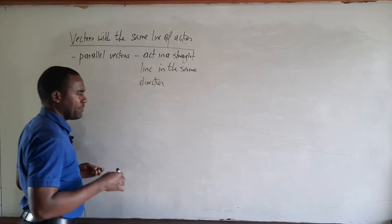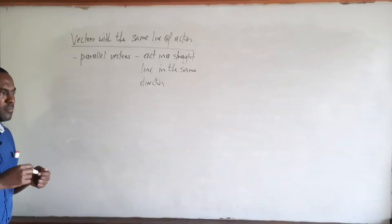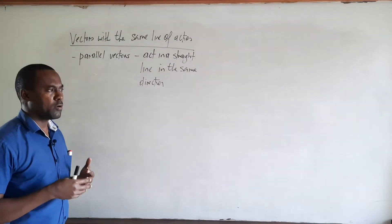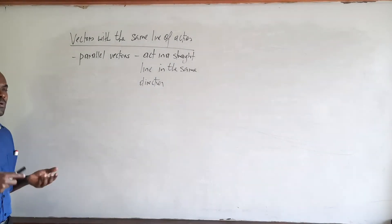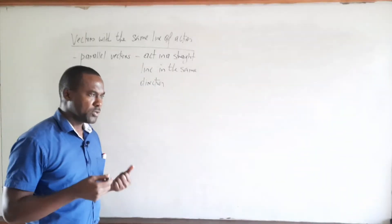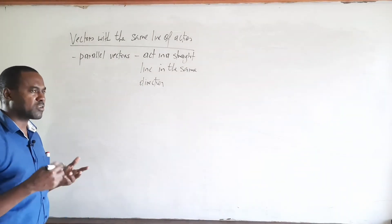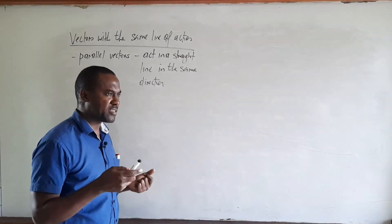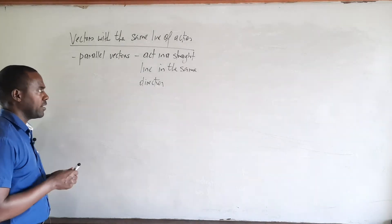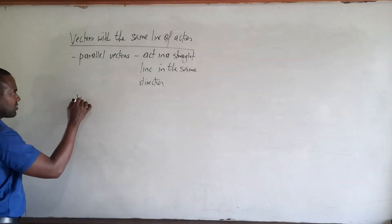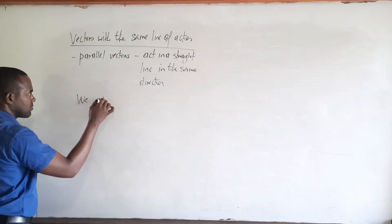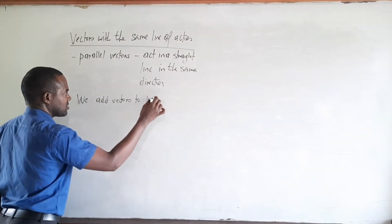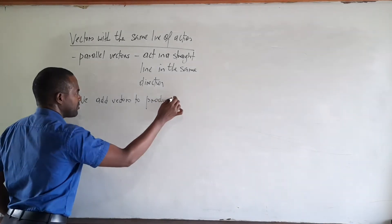When two vectors are parallel, they act along a straight line in the same direction. When we add vectors we produce what is called a resultant, which is essentially a single vector that produces the same effect as the vectors we added.